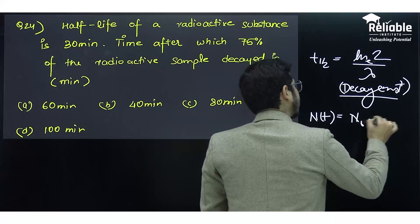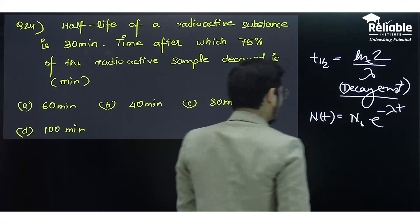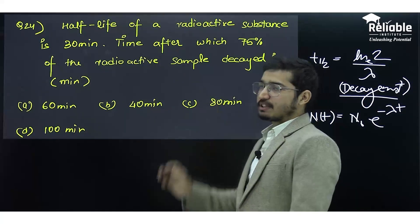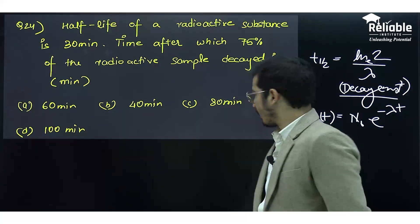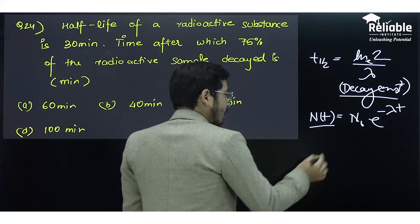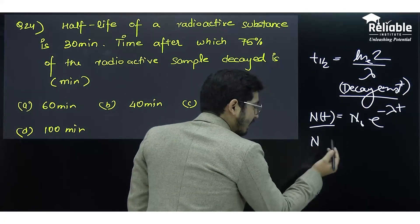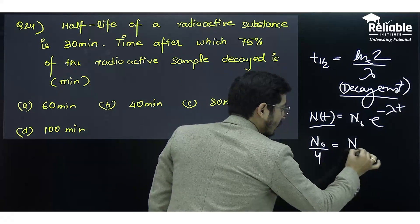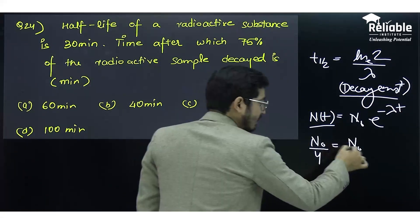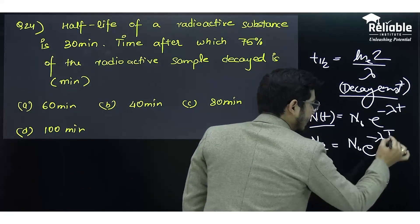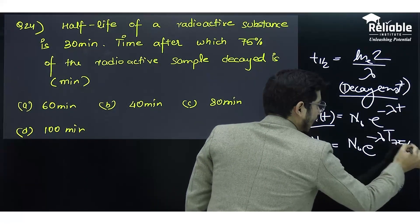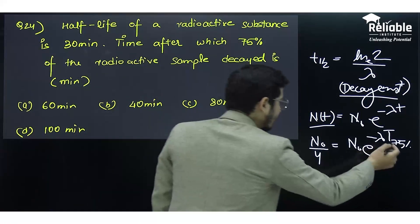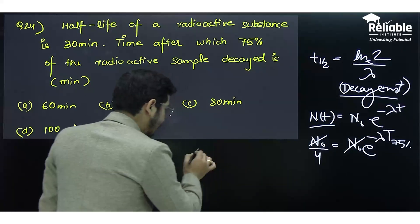The basic disintegration equation is N(t) = N₀e^(-λt). They are asking for the time when 75% of the material has decayed. So 25% remains, which is N₀/4 = N₀e^(-λt_75%).